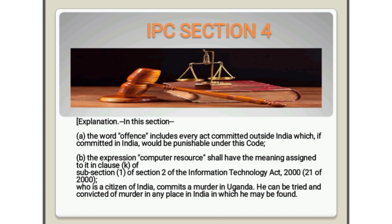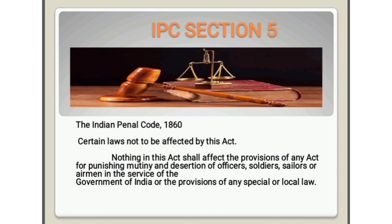Illustration for Section 4: A, who is a citizen of India, commits a murder in Uganda. He can be tried and convicted of murder in any place in India in which he may be found.